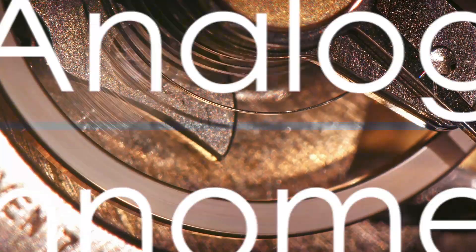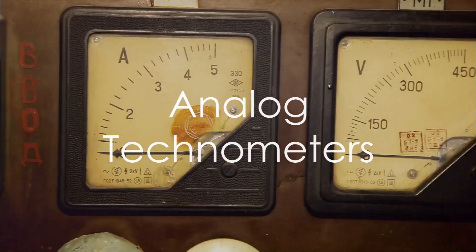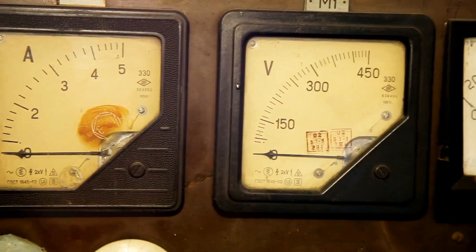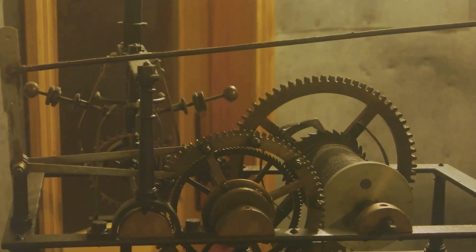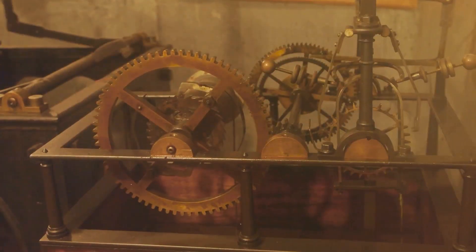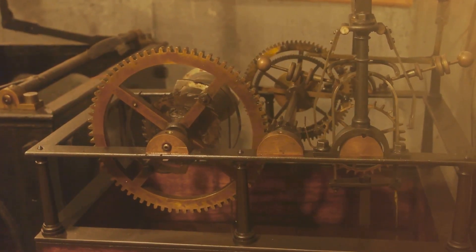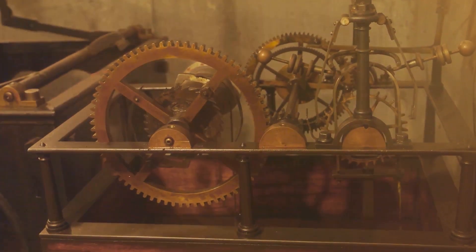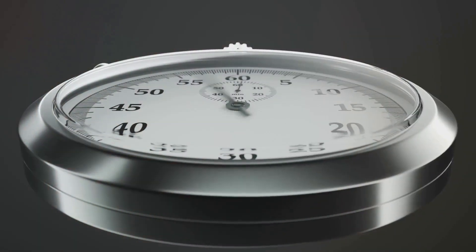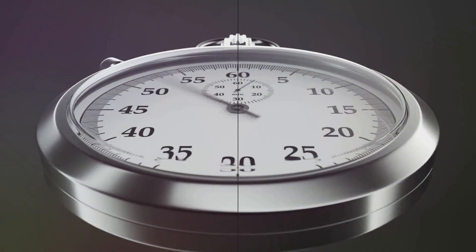The first type we'll discuss is analog technometers. These are the traditional needle-based meters commonly found in older equipment. They rely on a mechanical system where the measured parameter affects a coil or magnet, causing the needle to move across a scale. Analog technometers are known for their simplicity and durability.